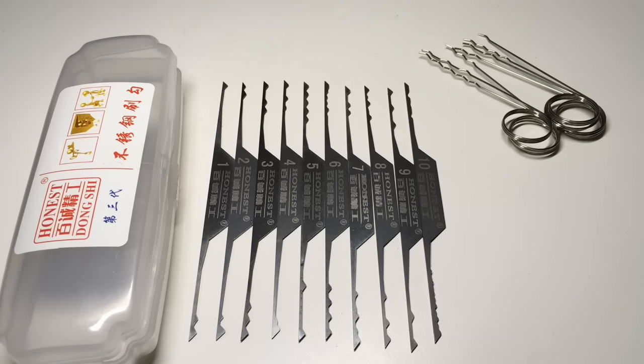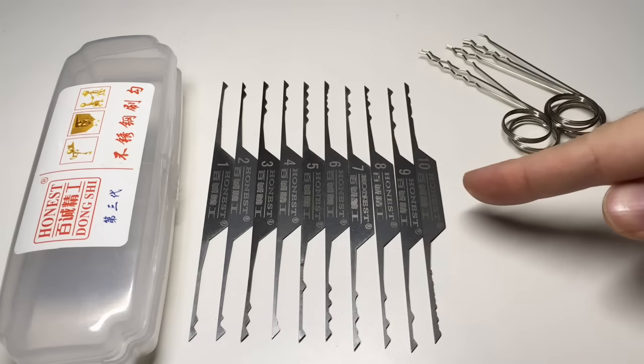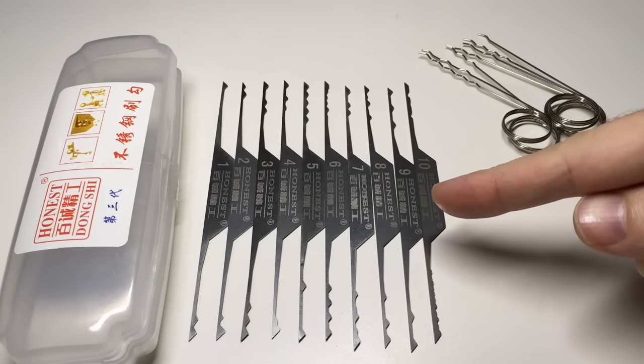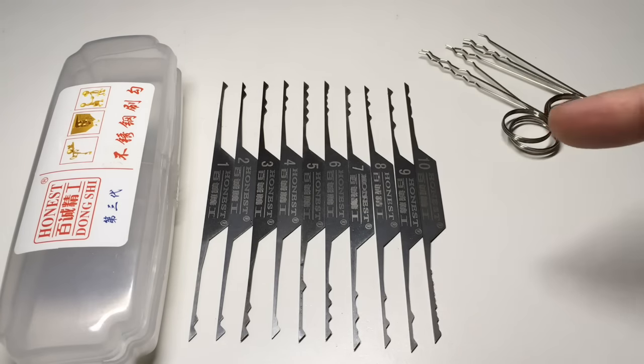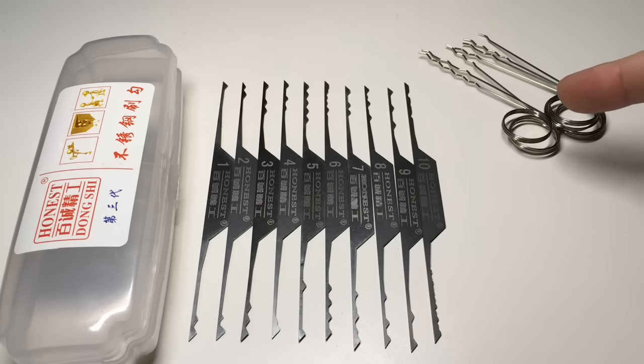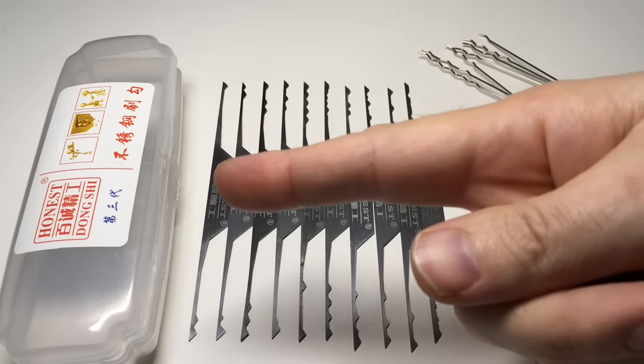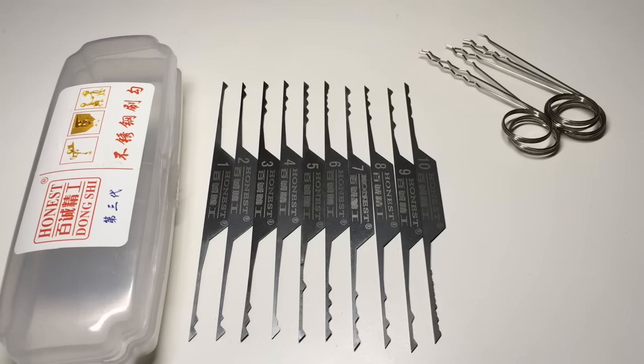That makes it just under £6 for everything you see here. This set comes with 10 double-sided wave or brush rakes, therefore it gives you 20 different profiles, plus 7 wire finger rakes. It comes in a perfectly serviceable plastic case, although personally I'd probably want to get myself another folding case.